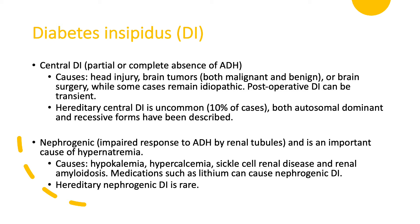The important causes of nephrogenic DI to remember are: hypokalemia (low potassium), hypercalcemia (high calcium), sickle cell disease, and renal amyloidosis. Of the medications, the most important by far is lithium. These patients often come in with hypercalcemia, develop DI, and present with dehydration, leading to acute kidney injury. There are also hereditary cases of nephrogenic DI, just as there are rare hereditary cases of central DI.